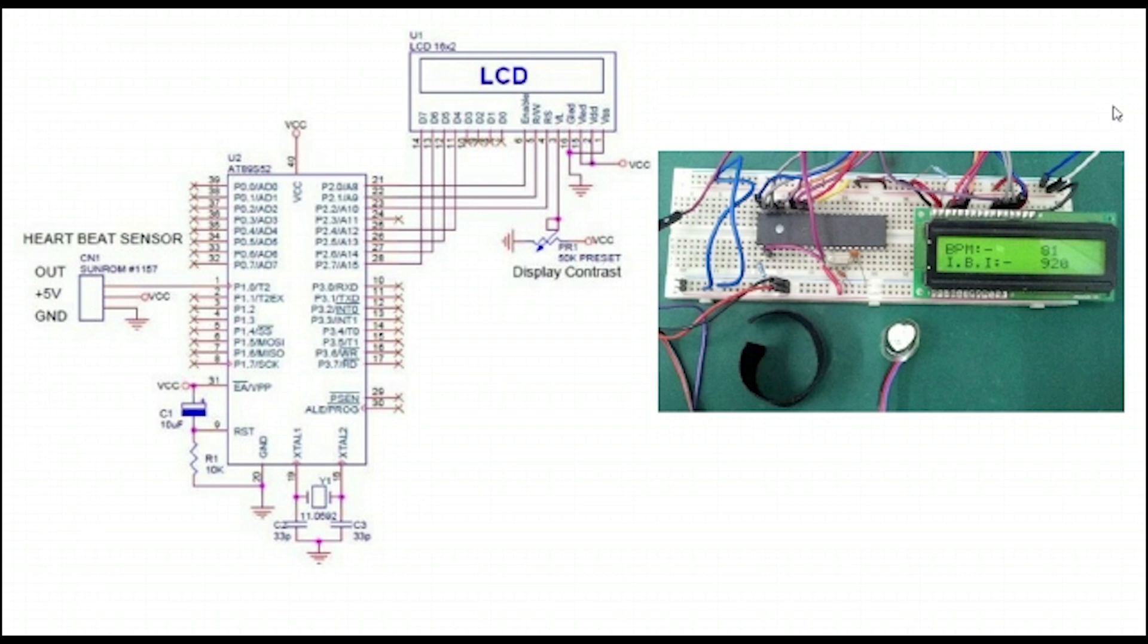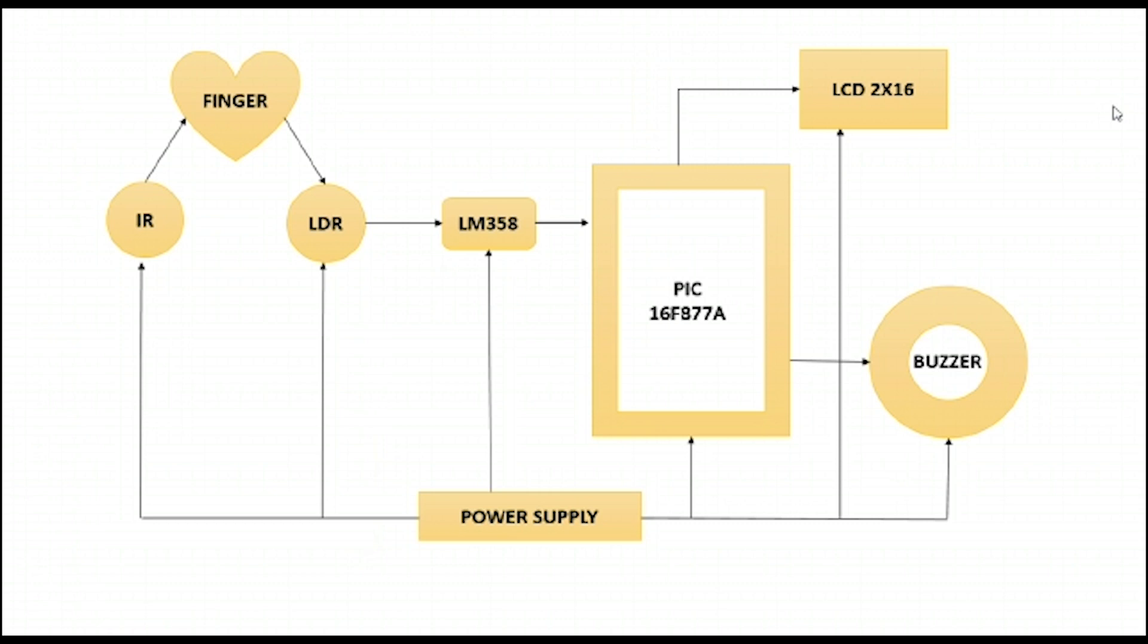The components used here are heartbeat sensor, IR LED, LDR which is light dependent resistor. As the light decreases, the resistance also decreases.